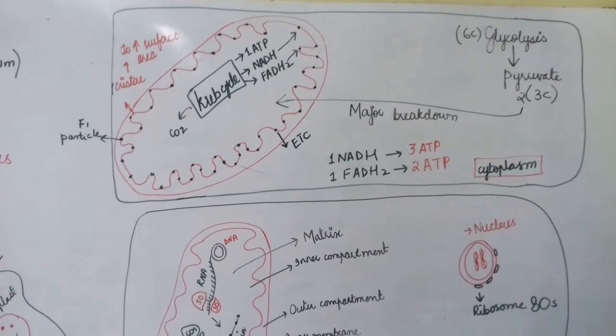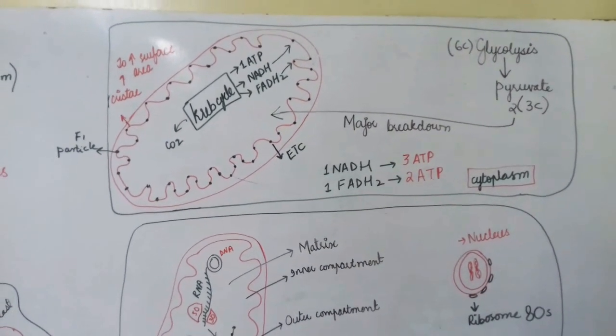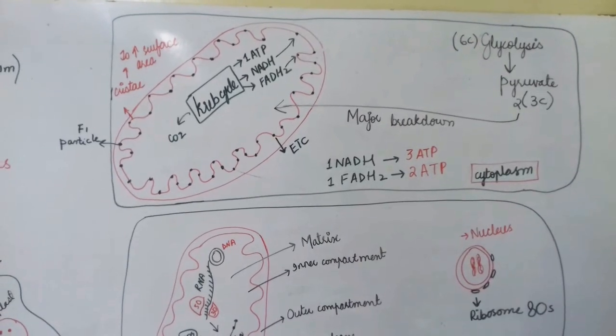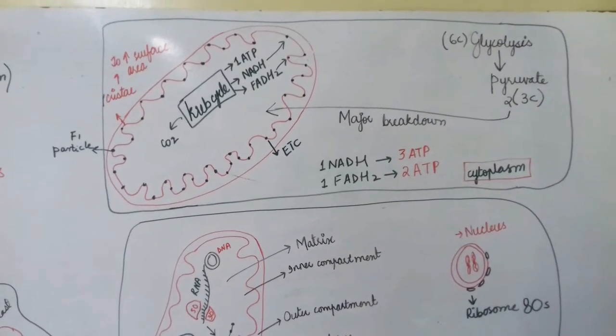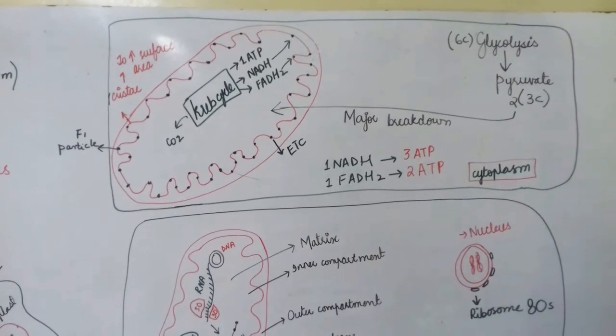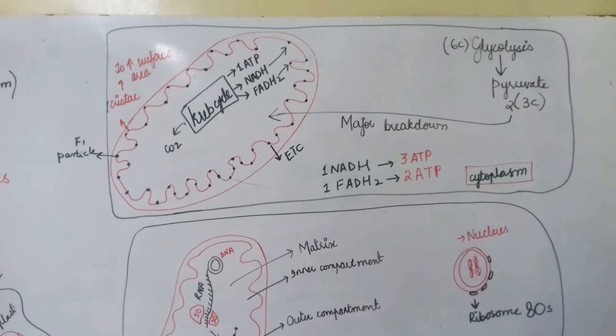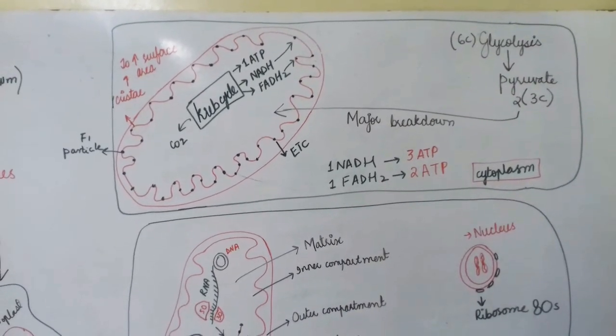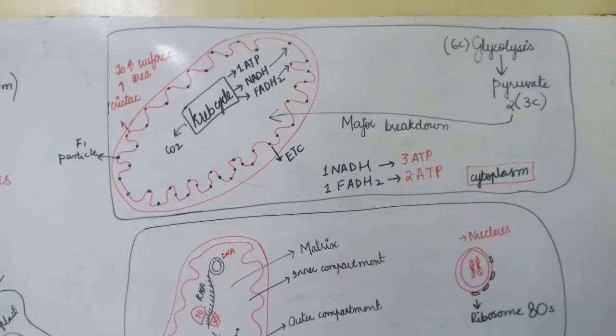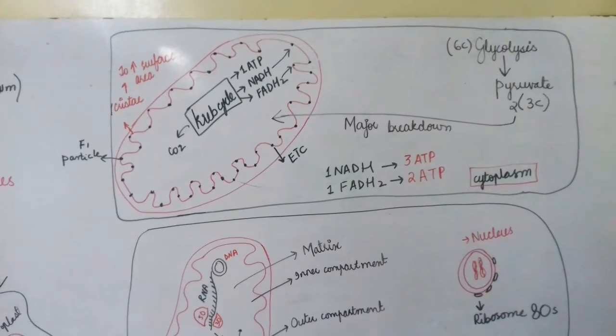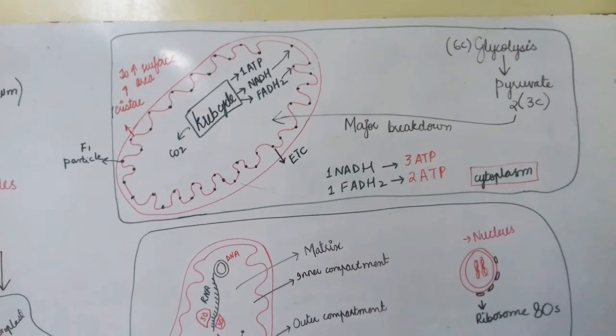Electron transport chain occurs on the cristae, which have knob-like structures called F1 particles. There the electron transport chain runs, and ATP is produced. One glucose produces 36 ATP in the presence of mitochondria. If mitochondria is absent, just 2 ATP is produced.